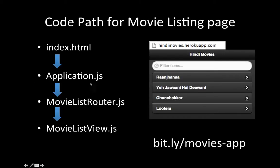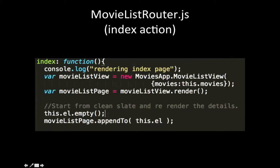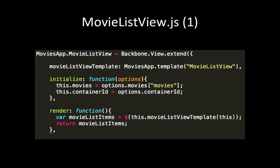All of these JS files — application.js, movie-list-router.js, and all your views — are included in your HTML page. When you go to the listing page, the router calls the index method, whose responsibility is to call the view, give it the dynamic data, and get the HTML from it. Every time the index method is called, it starts off with a fresh empty element, then appends the generated HTML from the view to the parent page.